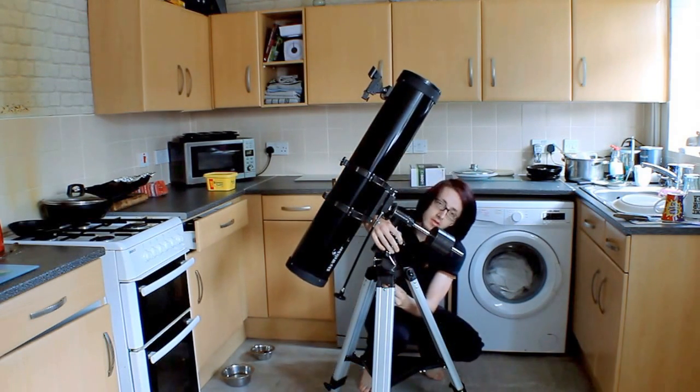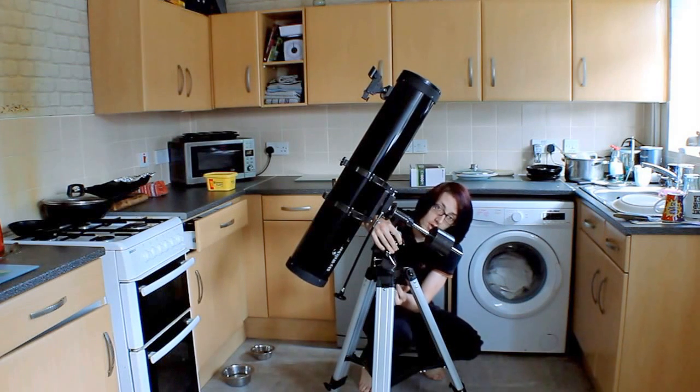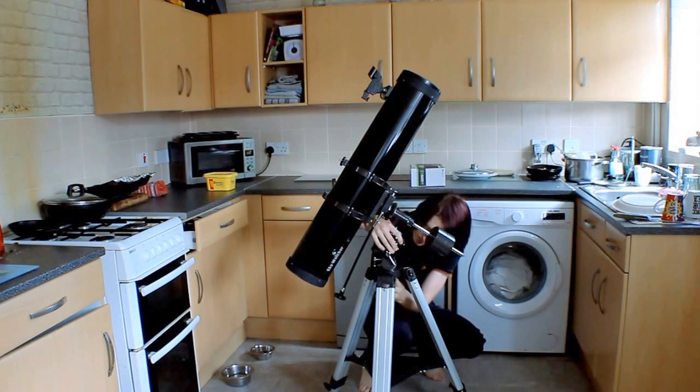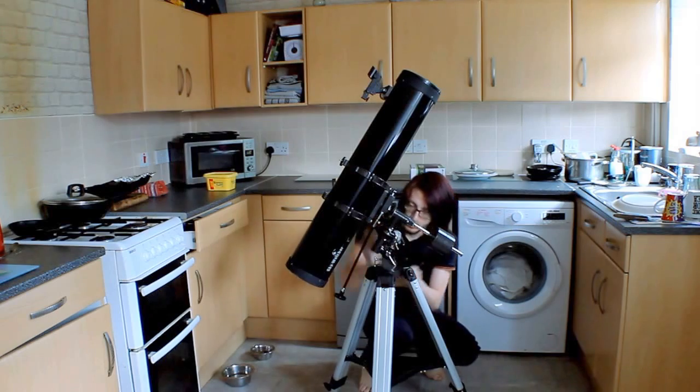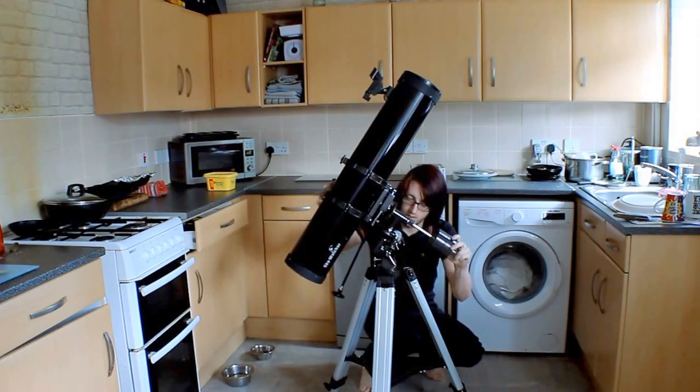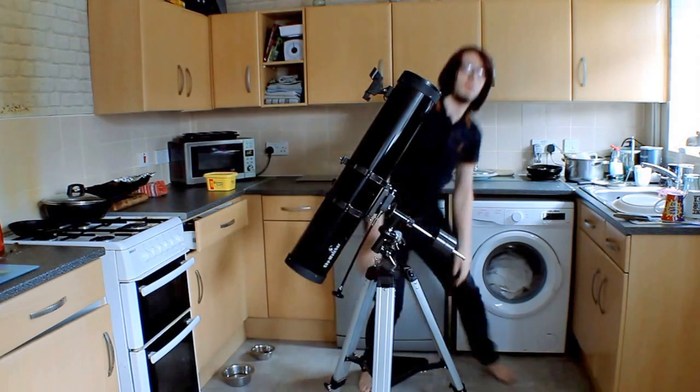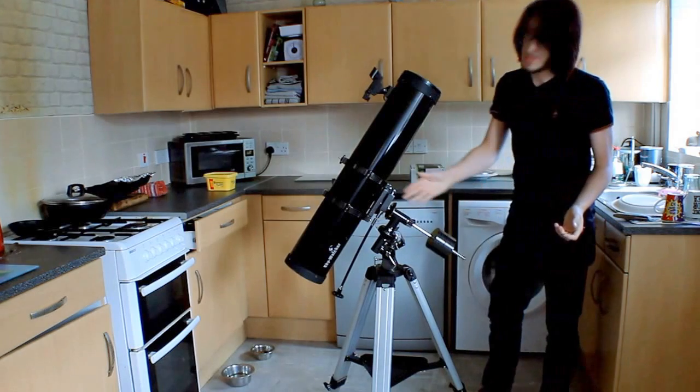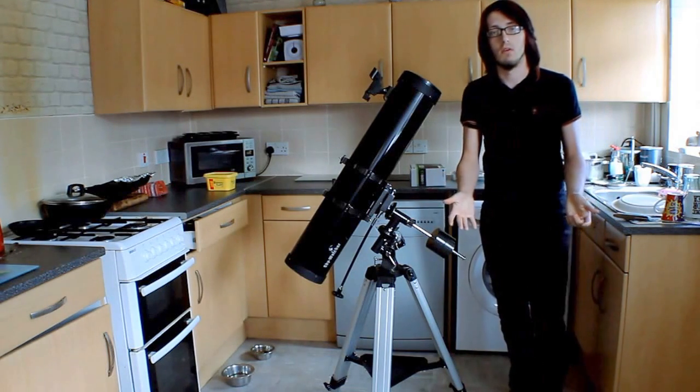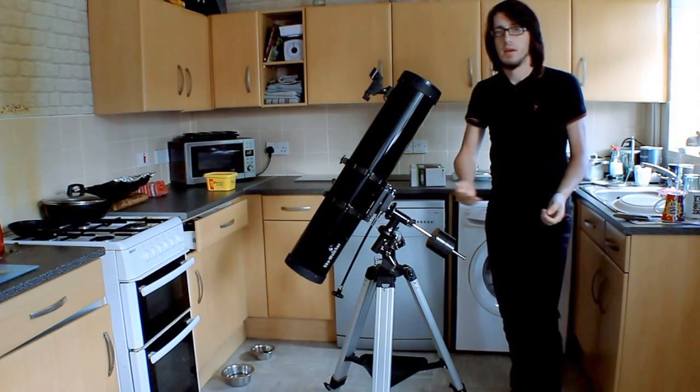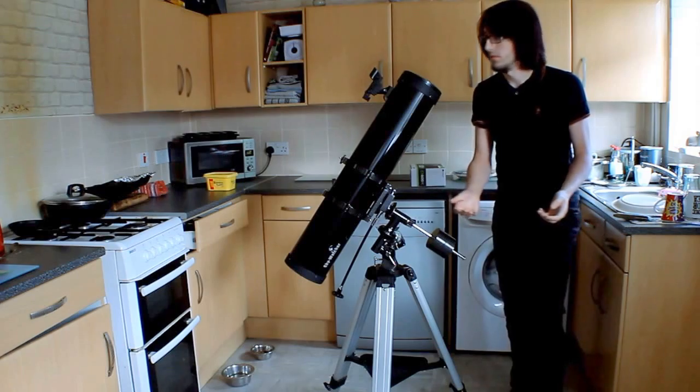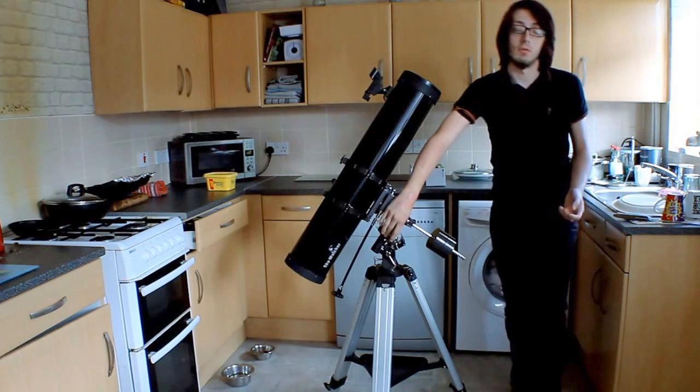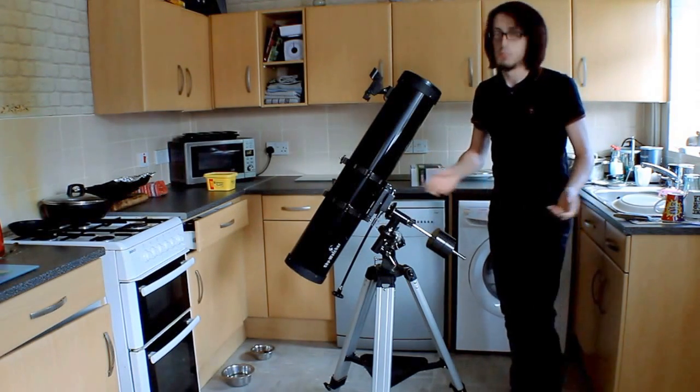First attach it to the tripod and screw it on nice and tight using the knob on the bottom. Now, before we're going to settle, I'm going to show you each individual part of the telescope, what it's for and how to use it. I'm going to go into depth later on how to use different parts, such as these two things which are called setting circles.